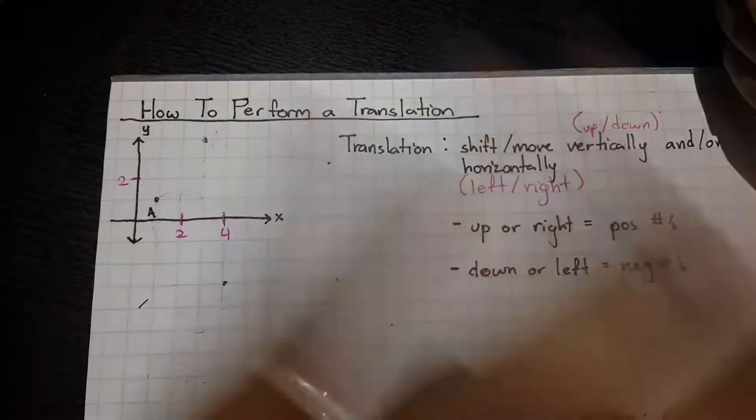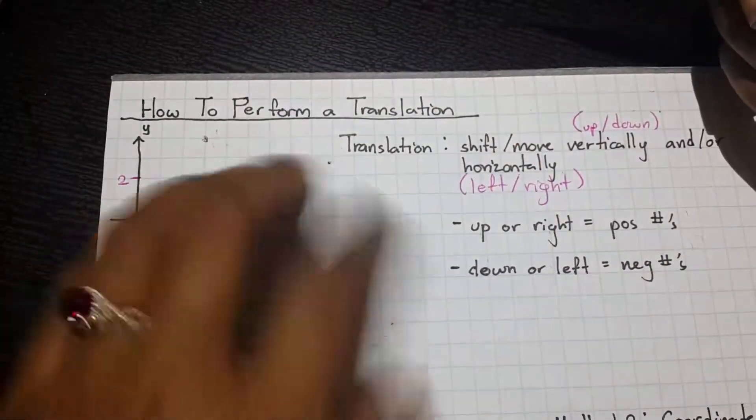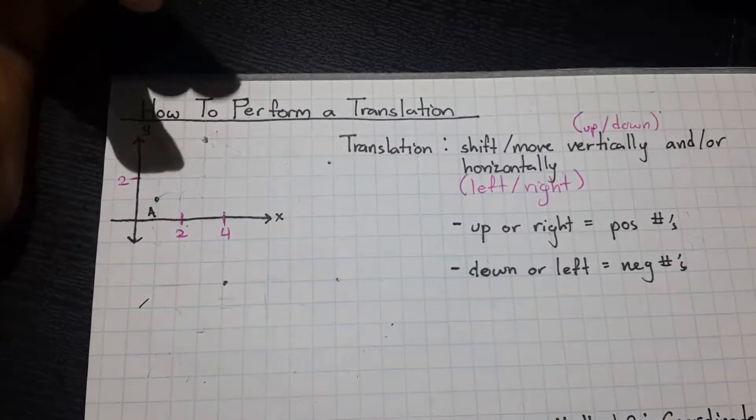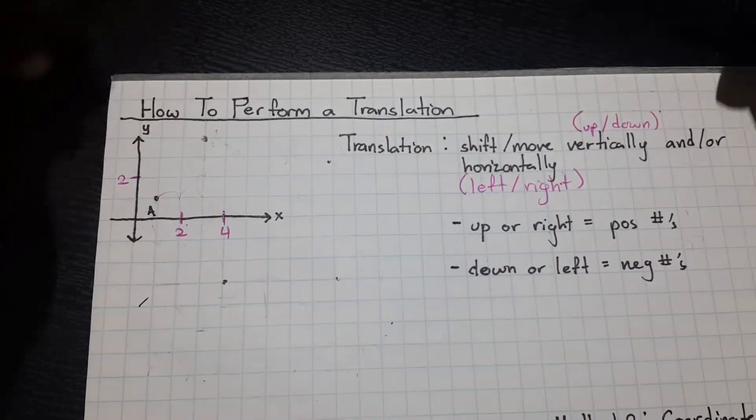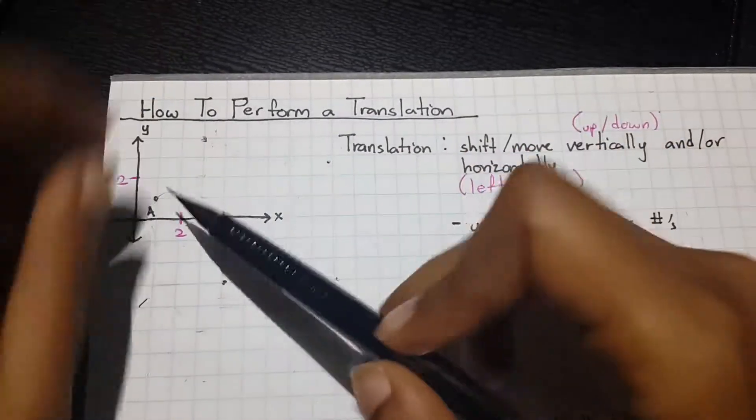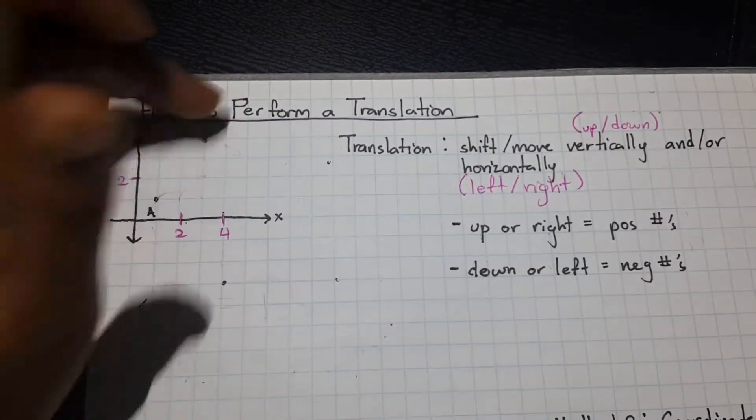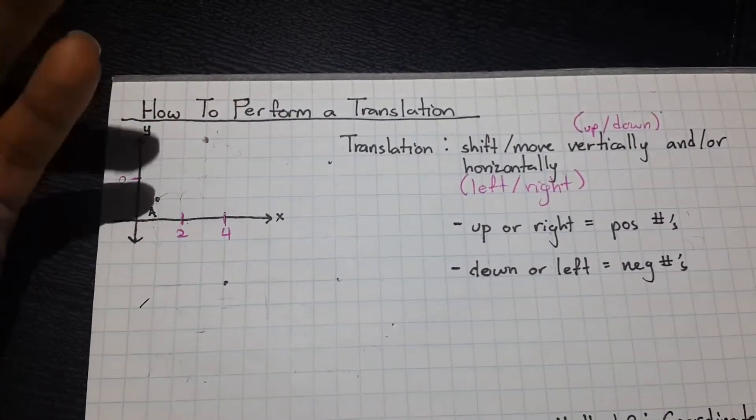Now, in terms of just translations, that's pretty much it, but we want to go more into detail in terms of terminology and labeling and notation. So, whenever we perform any type of transformation, we label the set of corresponding points appropriately.